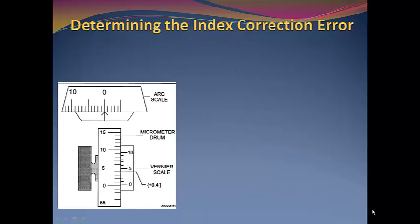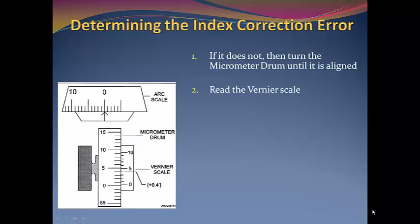If when using the previous steps, and if the horizon does not line up, then turn the micrometer drum until it is in line. Then read the Vernier scale. The example shows plus 0.4 minutes.